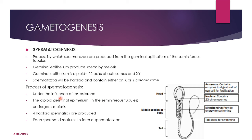Here is the process of spermatogenesis — these are easy marks. It happens under the influence of testosterone. The diploid germinal epithelium in the seminiferous tubules undergoes meiosis. Four haploid spermatids are produced. Each spermatid matures to form a spermatozoon. That is five marks. You must also be able to draw a labelled diagram of a sperm cell, and always include a title for your diagram.